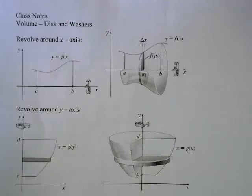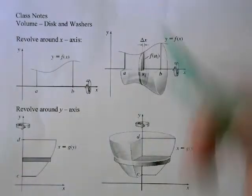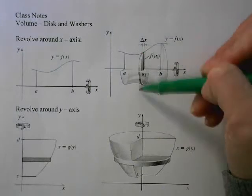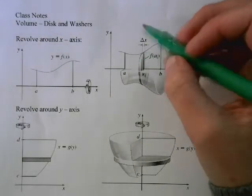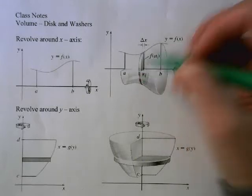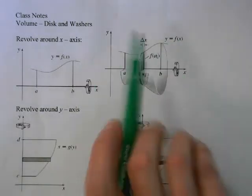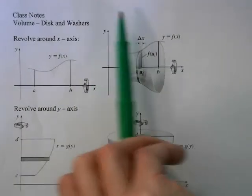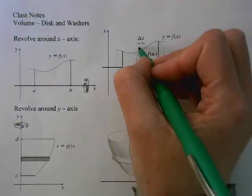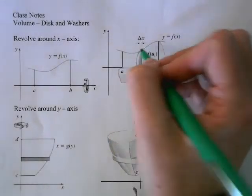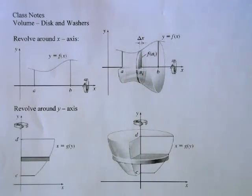So we're going to find the volume. If we take a cross section, we're going to have this little disc. The cross section is going to look like a circle. If you picture a whole bunch of these discs next to each other, we want the height of those discs to become infinitely small — that's where we use our integrals.